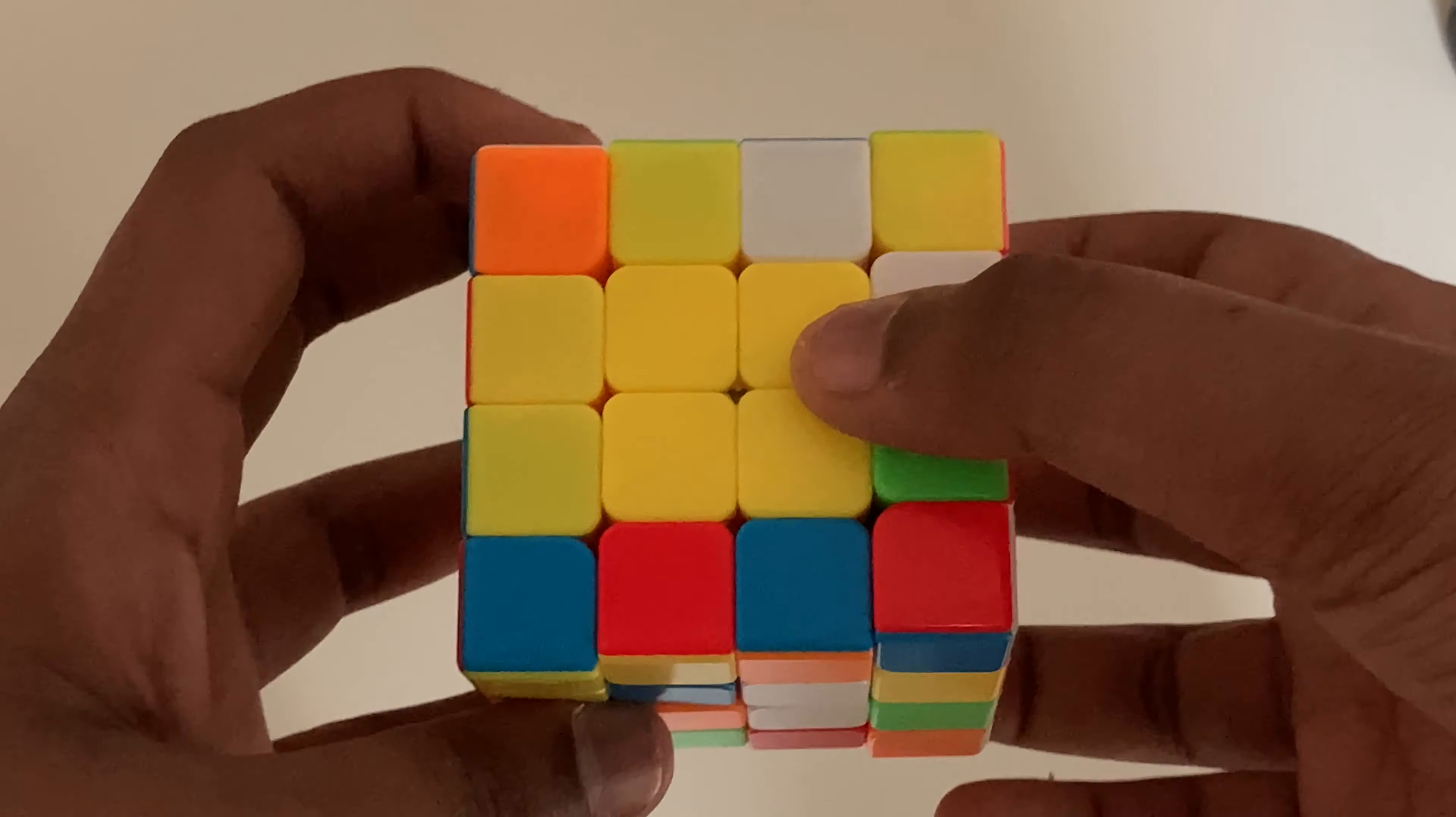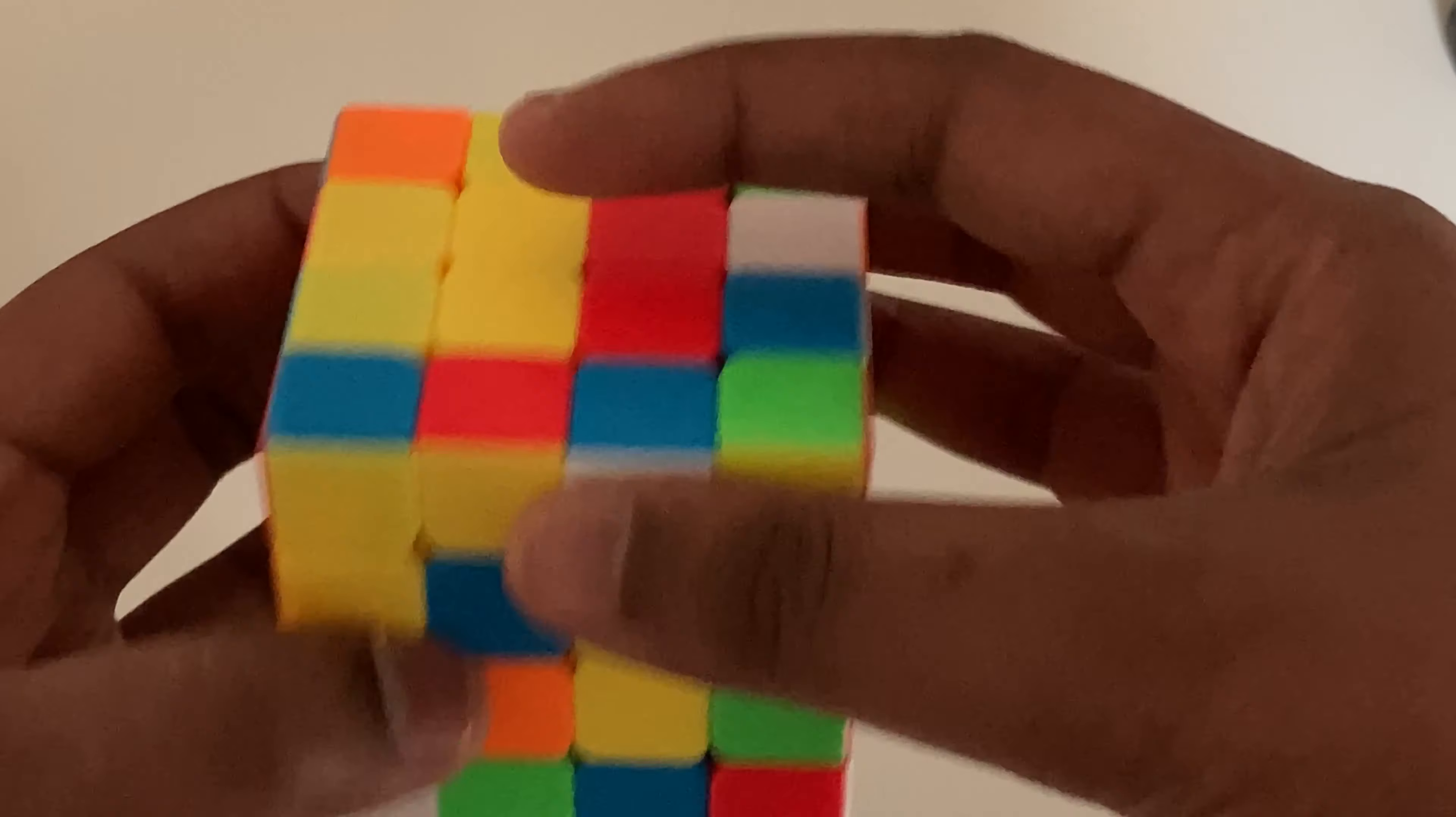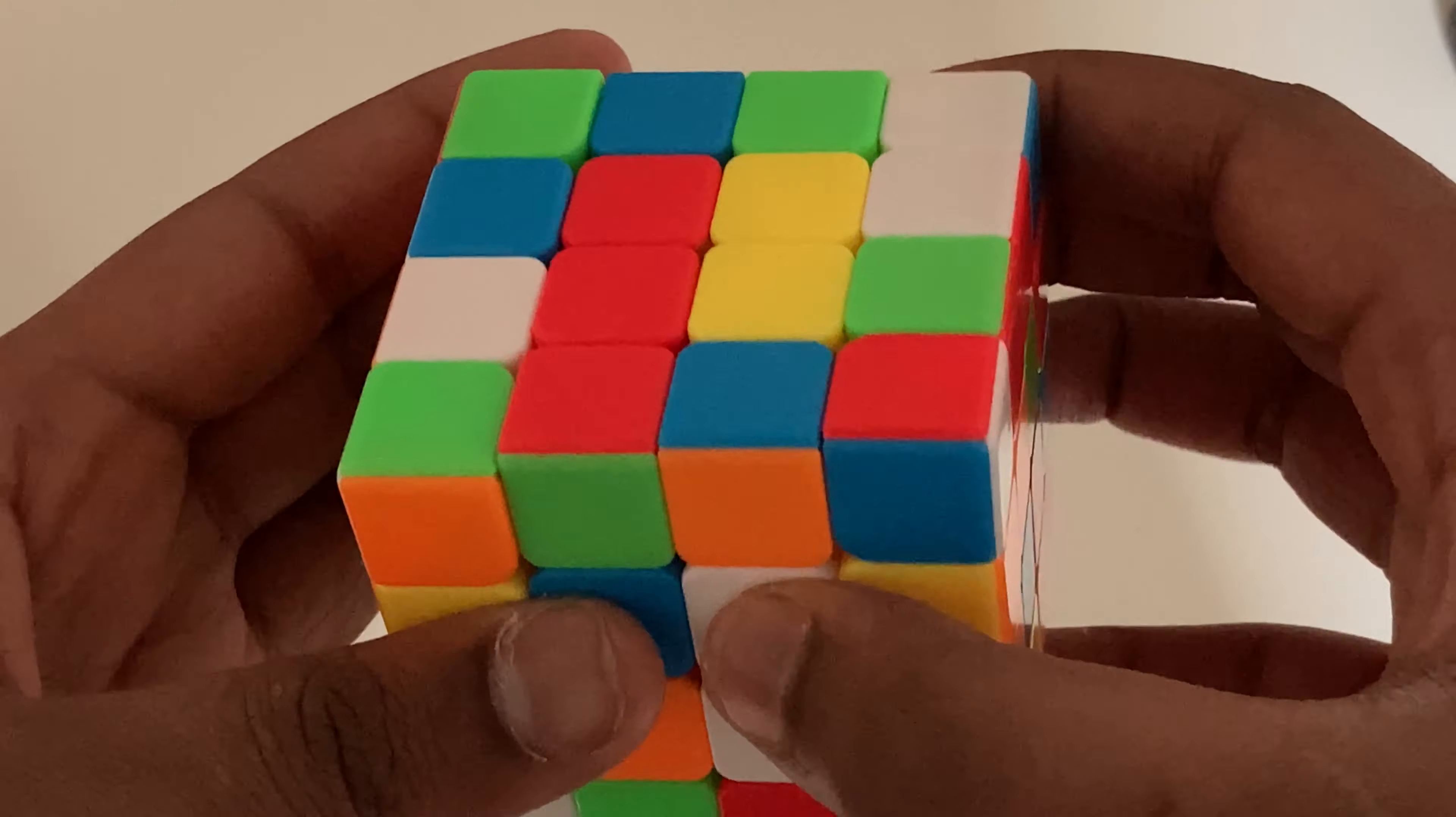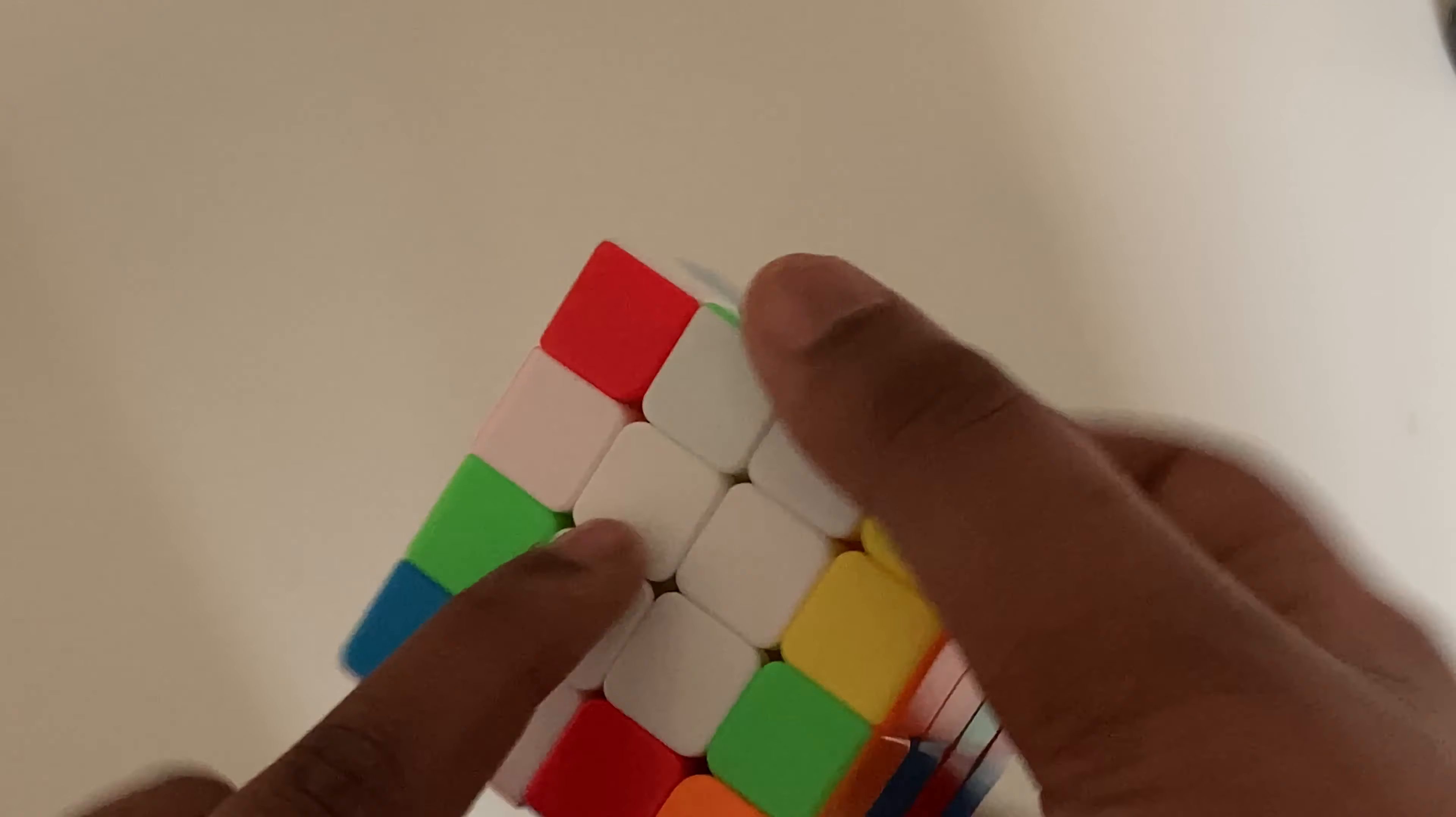So now the logical thing would be to just move it like this. But that ruins the white. So what we got to do is we got to put it like this, and we're going to go rw, u2, and rw prime. So now it's like that, and they haven't gotten ruined.